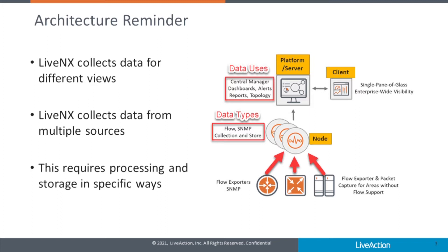When we review the LiveNX architecture, we see the flow of utilization and status data coming from network devices to the LiveNX server. This data is comprised of a variety of different formats, including standard and proprietary network flow protocols, standard SNMP information on statistics and status, and bidirectional forwarding detection data, or BFD, for SD-WAN.